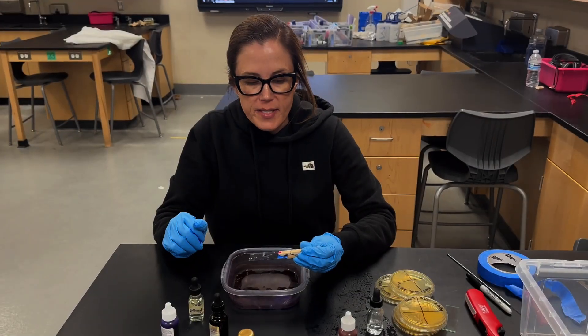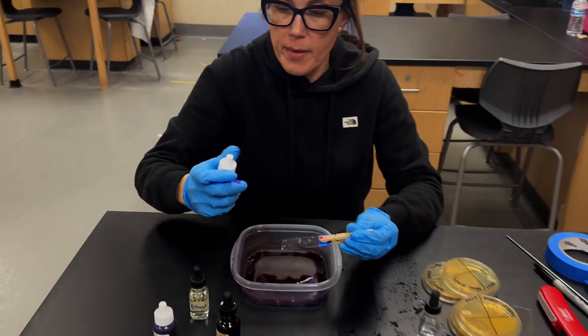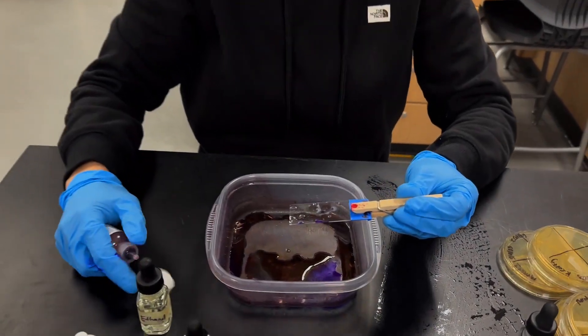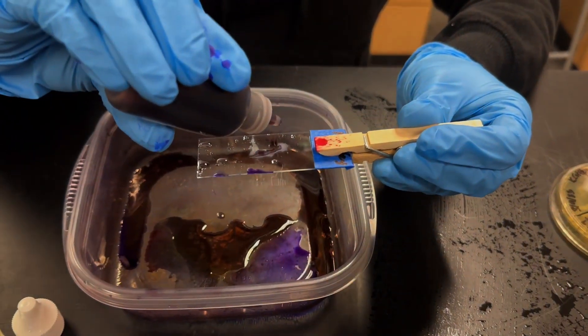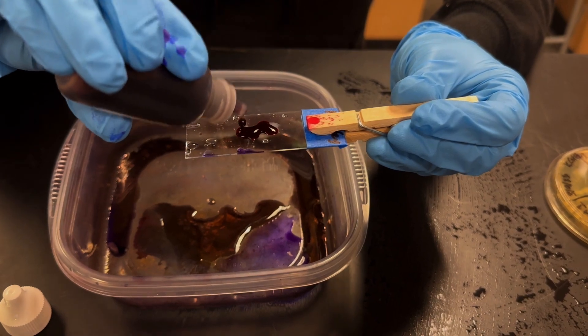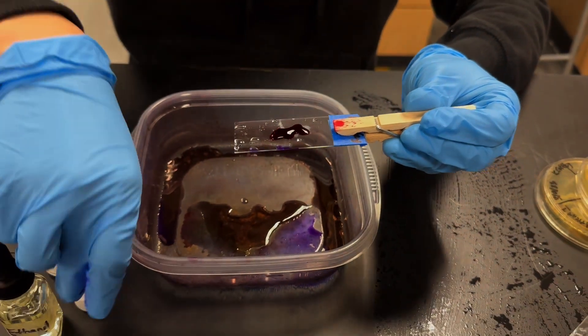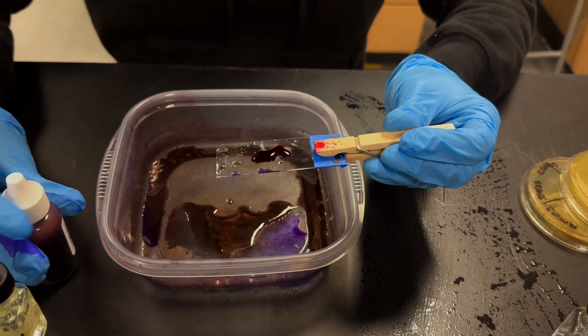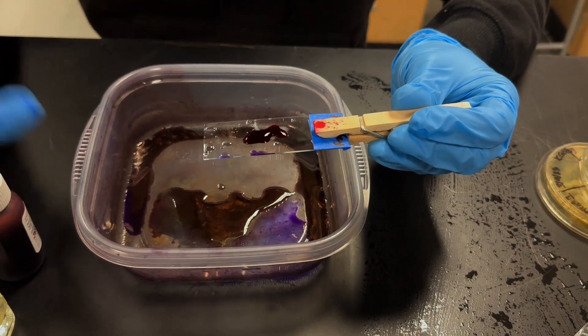The final step is to add safranin. So you'll open up your safranin container and again, you'll put one, two, three, maybe four drops on the slide. You'll set your timer for one minute.